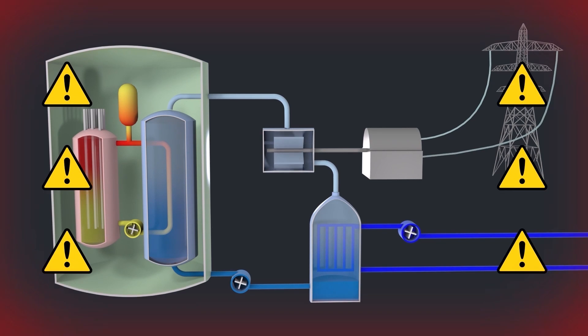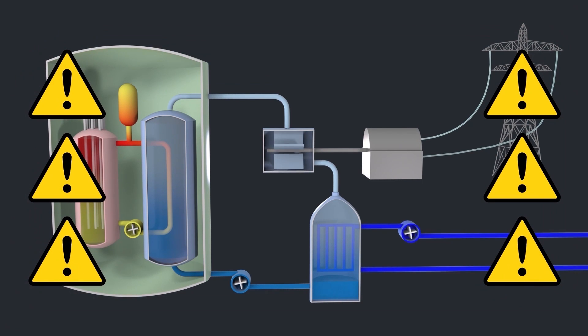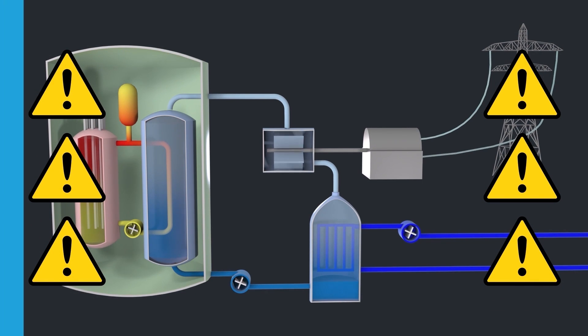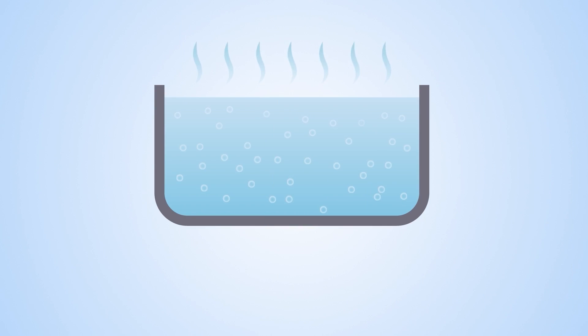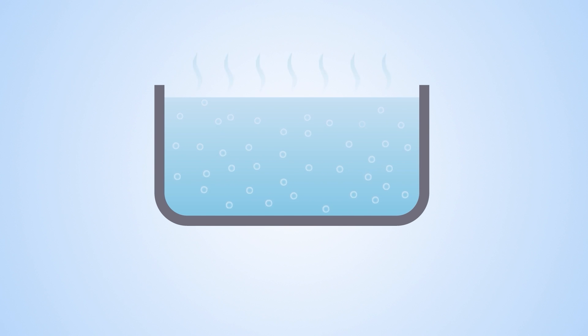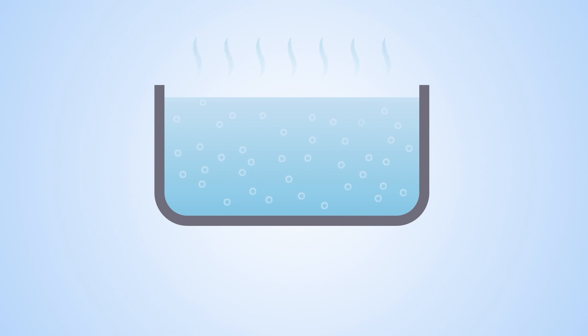However, due to the amount of energy involved, tight control is required. Nucleate boiling is a very effective method of providing sufficient heat transfer away from the core.